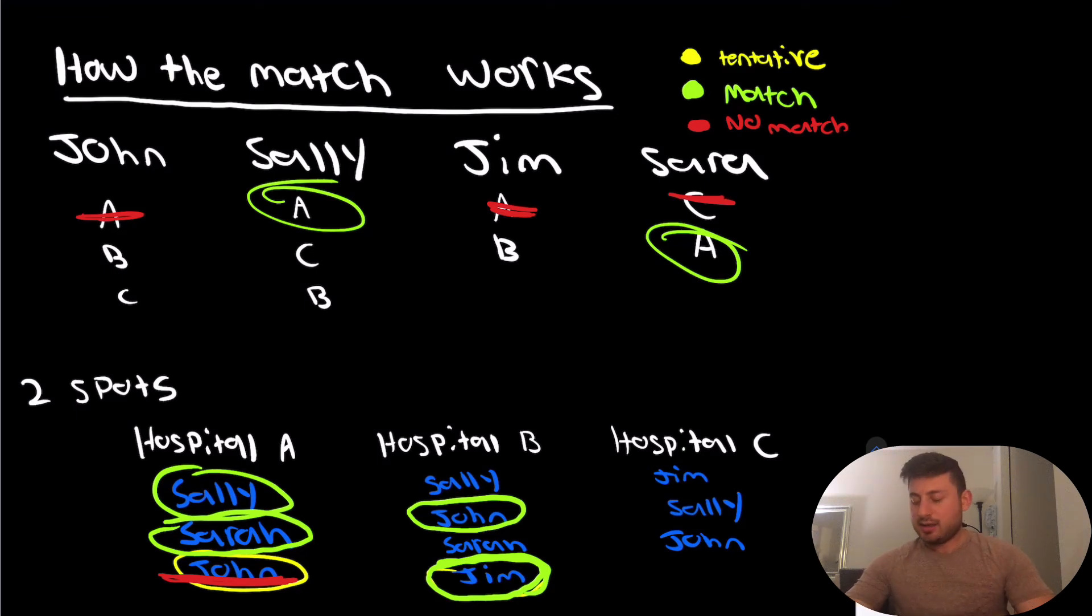So as you can see here, Hospital C actually is not going to match anybody, because they did not list Sarah on their list, and even though Sarah was their first choice, if she's not there, she's not going to match there. And so what this shows is that for both programs and applicants, if you don't rank a lot of programs, it could also end up hurting you. The fewer programs you rank, the less your chances are at finding a match. And for programs, the fewer applicants they rank, they might have spots that go unfilled.